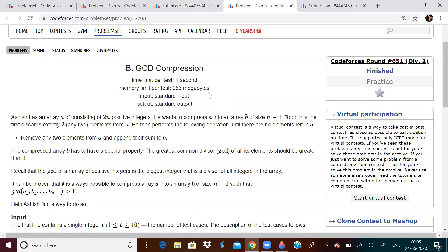Second question, GCD Compression. What do we have to do? We have been given an array of 2n positive integers. We have to compress the array into n minus 1 integers.